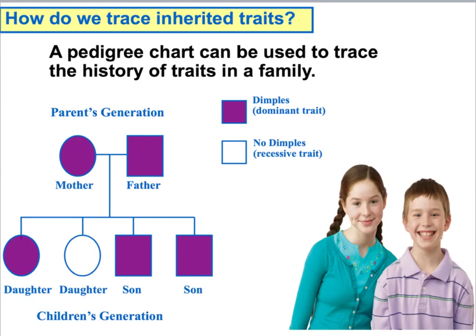A few things about how a pedigree is made: horizontal lines connect the parents, vertical lines connect parents to offspring. Males are often represented with boxes and females with circles. Individuals with dominant traits are shaded in, and unshaded shows recessive. That's one way to trace traits using a pedigree. As you go further in your studies of heredity, you'll find other ways — like Punnett squares — to trace these traits and figure out what you or your children might be like.